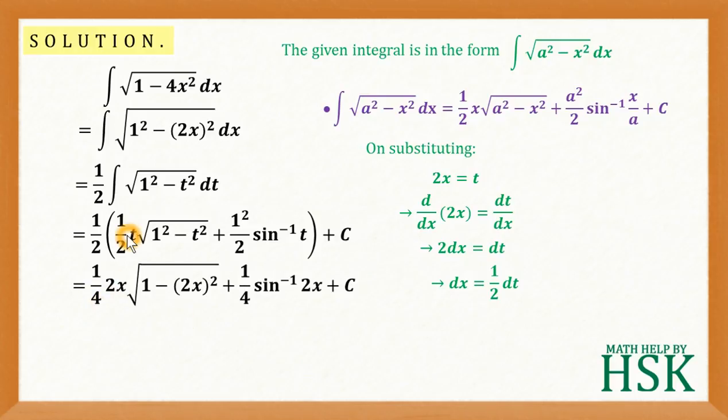Further, this 1 by 2 goes in. So, I get 1 by 4 here and instead of t, I am going to write 2x. So, I get 1 by 4 into 2x into square root of 1 minus 2x whole square plus 1 by 4. This 2, this 1 upon 2 and this 1 upon 2 becomes 1 upon 4 sin inverse of 2x plus c.